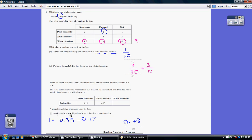Now for part C, remember that total probability always adds up to a whole, always adds up to one. So to work out the probability of white chocolate, it's one less the other two, which is 0.48. And that's it.